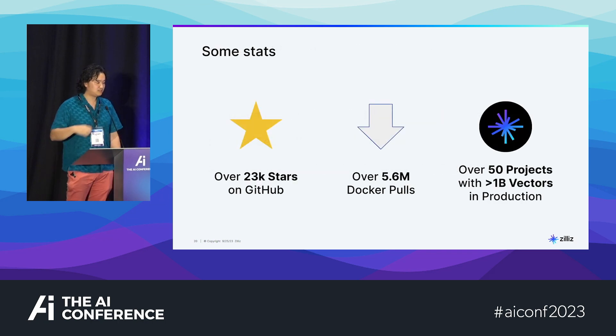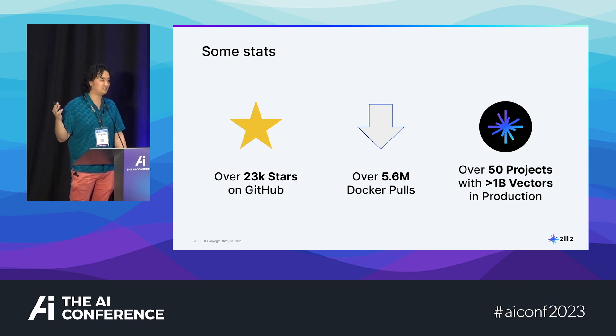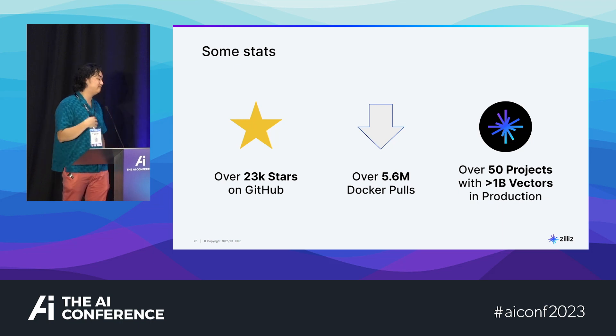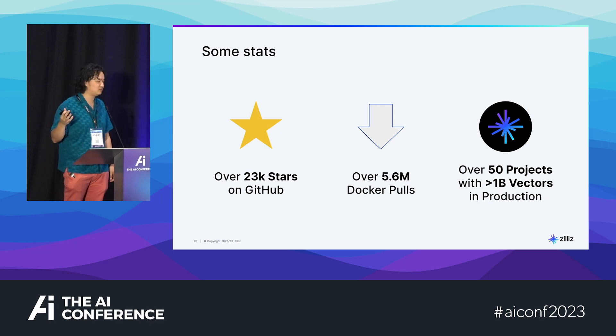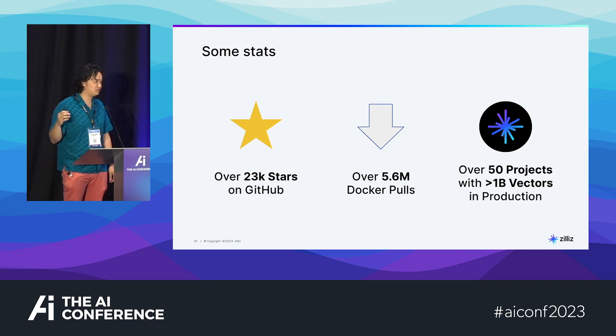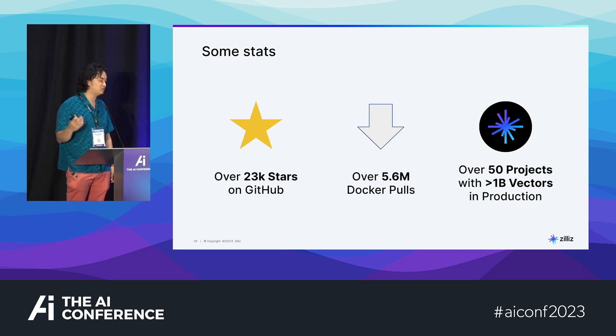Just some stats: we are the most popular vector database in the world. We have over 23K stars on GitHub, over 5.6 million Docker pulls, and over 50 projects with more than a billion vectors in production.